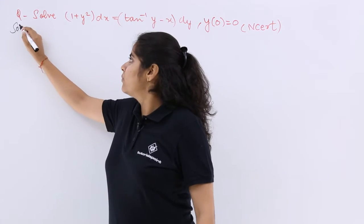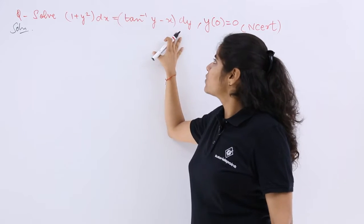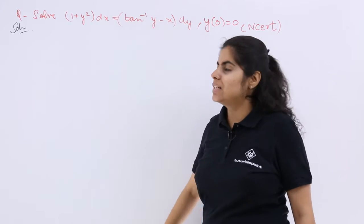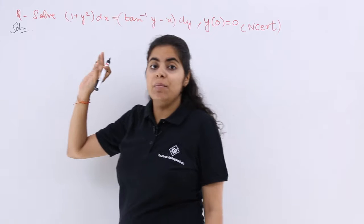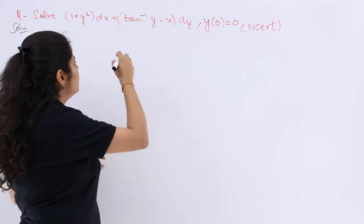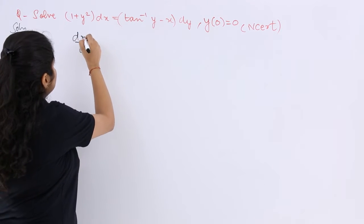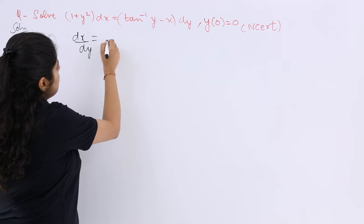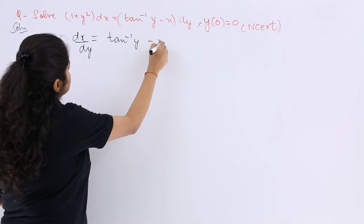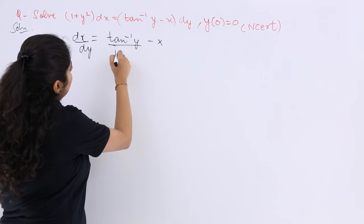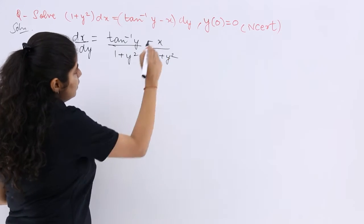Here, dx is associated and here it is dy. If I write dx upon dy, here dx/dy equals (tan⁻¹y - x) over (1 + y²).